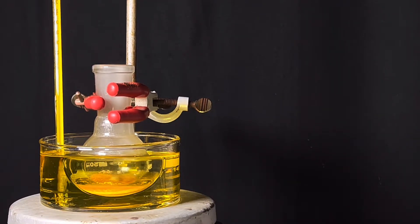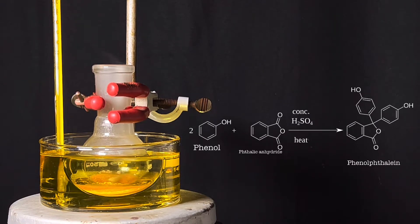While it is getting heated let us go through the chemical equation of the following reaction. 2 molecules of phenol condenses with 1 molecule of phthalic anhydride in the presence of concentrated sulfuric acid to form phenolphthalein.